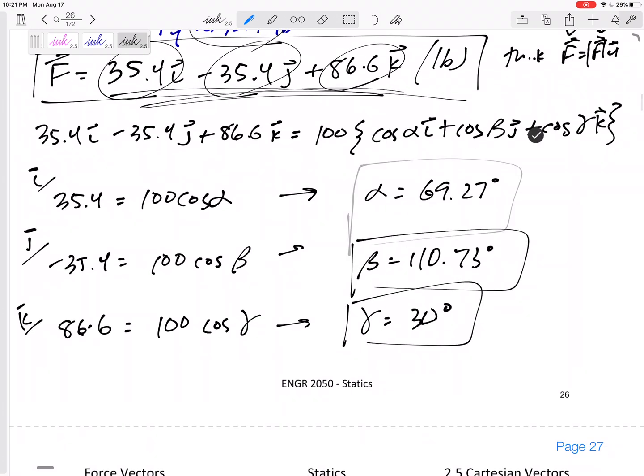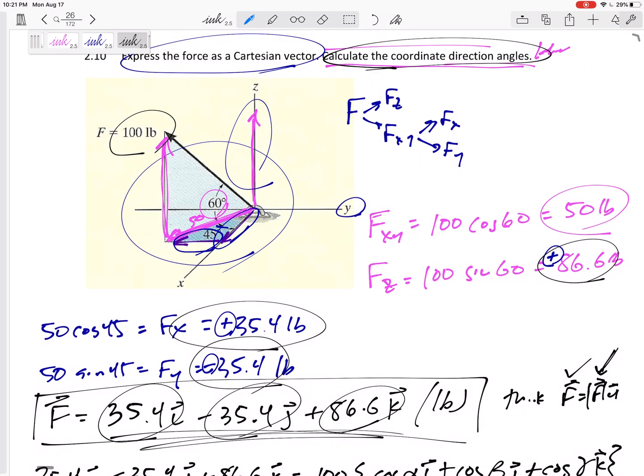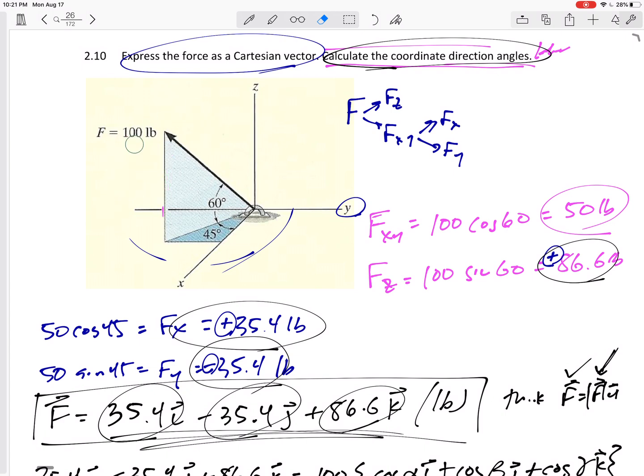So there we go. There's our coordinate direction angles. You know, I actually knew that gamma already. I didn't do anything to this vector. I didn't add two vectors together or anything.